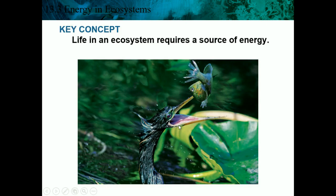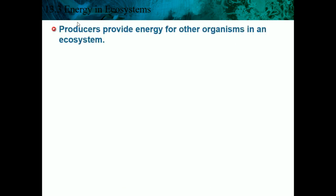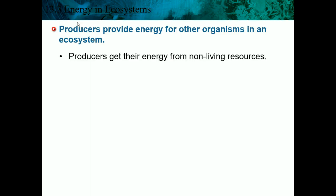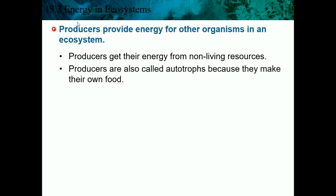Section 13.3: Energy in Ecosystems. The key concept is that life in an ecosystem requires a source of energy. Producers provide energy for other organisms in an ecosystem — they are the base of the pyramid. In ecology, pyramids are used to describe what eats what and the levels of energy. Producers get their energy from a nonliving resource, usually the sun. Producers are also called autotrophs because they make their own food — autotrophs and producers can be used interchangeably.